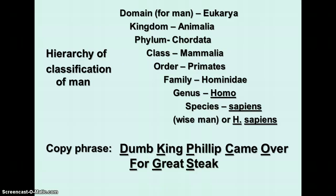An eighth category has been added since Linnaeus' time. This is called the domain, and the domain is the biggest. There are three domains, six kingdoms, and any number of phylums, classes, orders, and so forth.